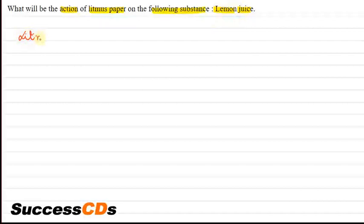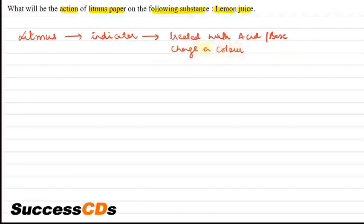First of all, if we talk about litmus, litmus is an indicator. And what is an indicator? An indicator is a substance that when treated with acid or base will change. And what change can happen? It can be a change in color or it can be a change in odor. These indicators can change in color and odor.